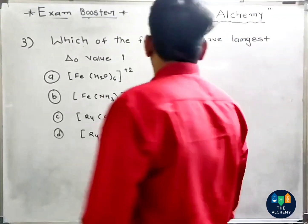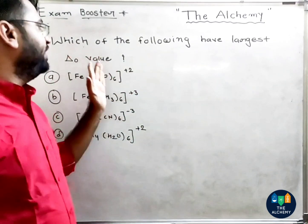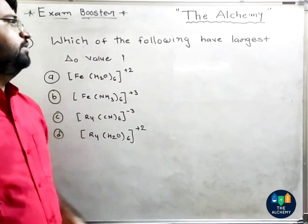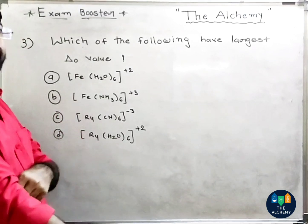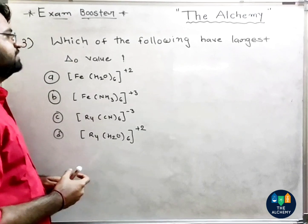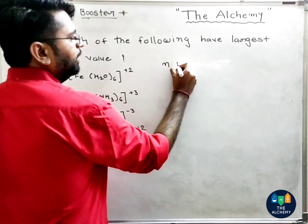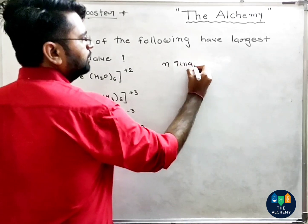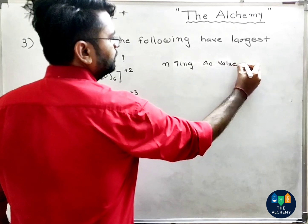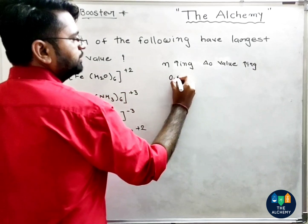The next question is: which of the following has the largest delta octahedral value? We apply the factors affecting delta octahedral: as the relevant factor increases, delta octahedral value increases.